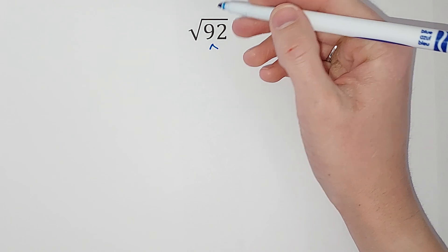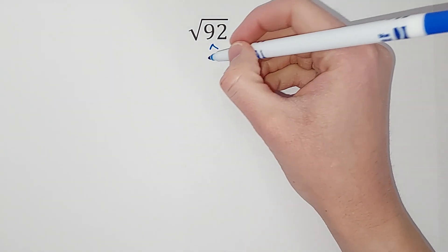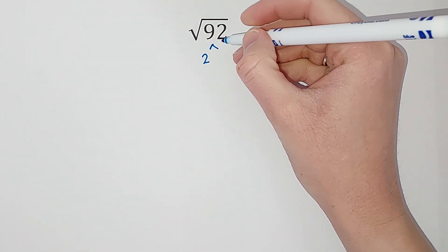This is what we do: I'm going to break 92 up. I noticed that 92 is even, so I know 2 goes into it, so 2 times 46 gives me 92.